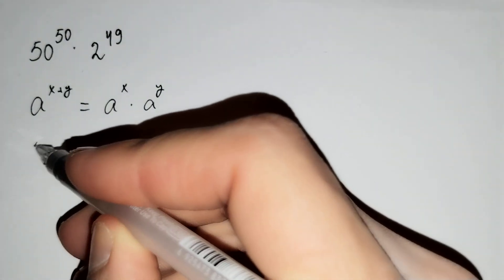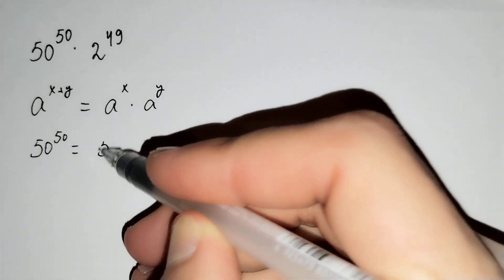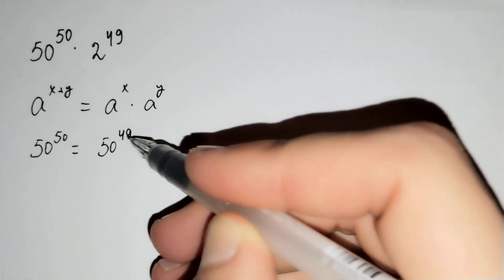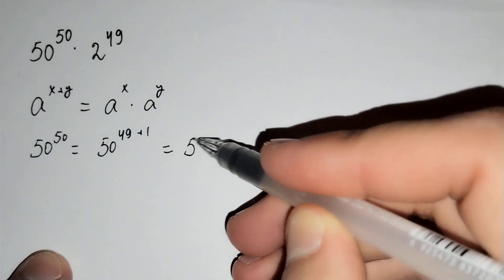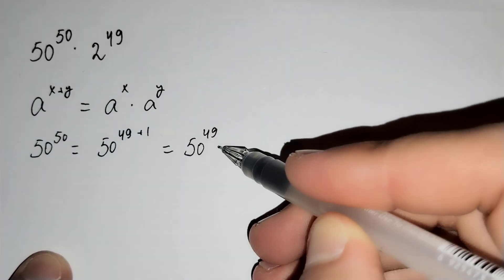And here, 50 power 50 equals 50 power 49 plus 1. For this formula, 50 power 49 times 50.